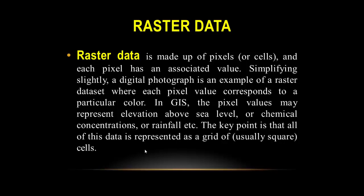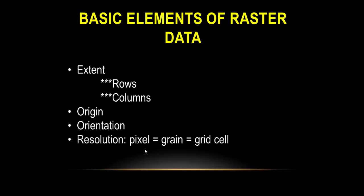The basic elements of raster data: the extent is defined by rows and columns. Raster data has an origin, orientation, and resolution, which is the pixel size or grid cell size.